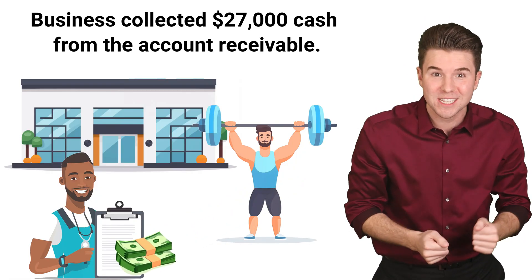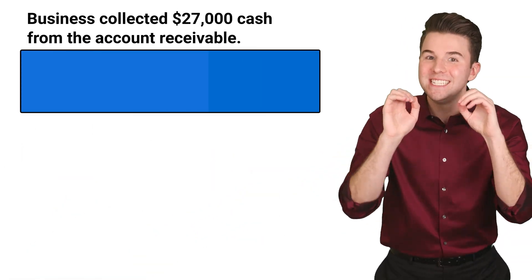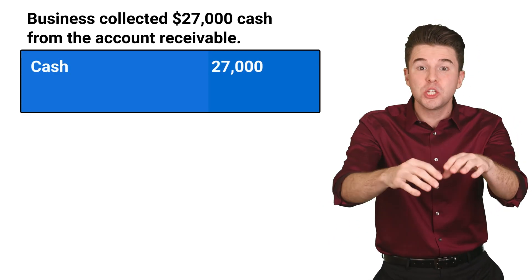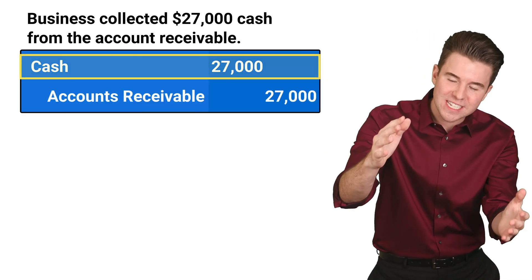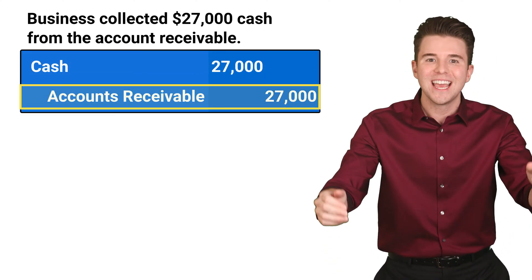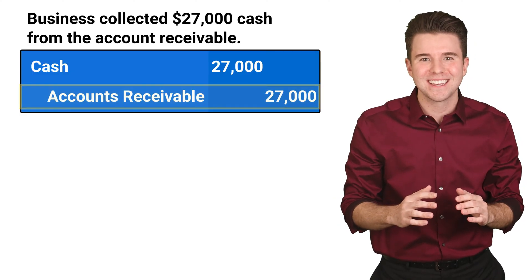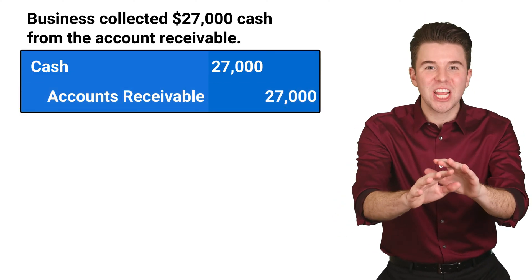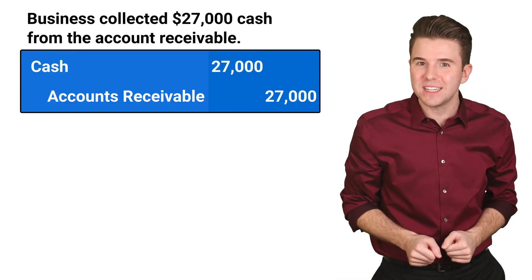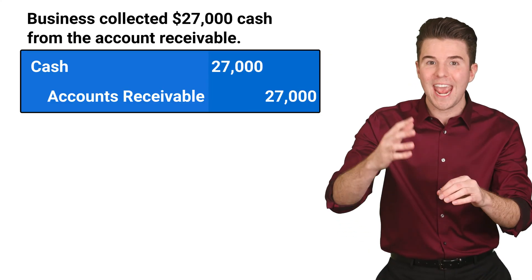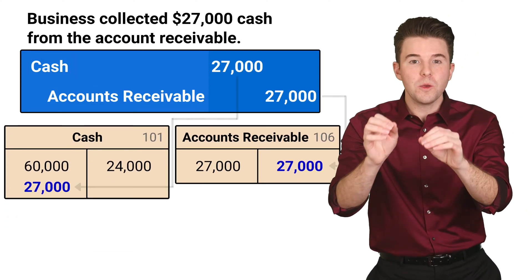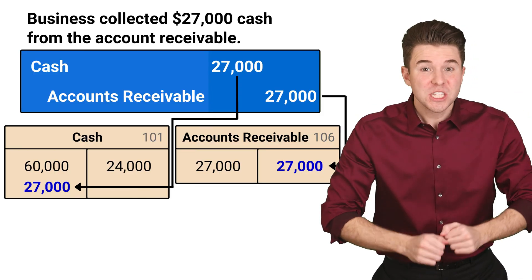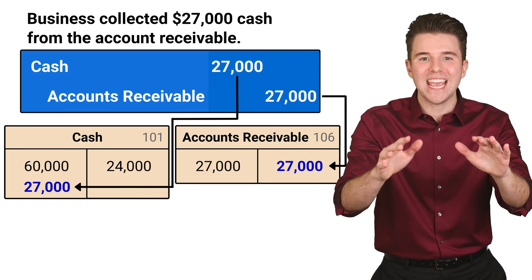A couple weeks later, when the customer pays us for the $27,000 worth of training services, we record a debit to cash for $27,000 and a credit to accounts receivable for $27,000. The debit to cash increases that asset account and the credit to accounts receivable decreases that asset account. The payment by the customer does not change the total amount of assets and does not affect liabilities or equity. It converts one asset, the receivable, to another asset, cash. Also, we already recorded the revenue when we earned it, so receiving the cash does not create any additional revenue.